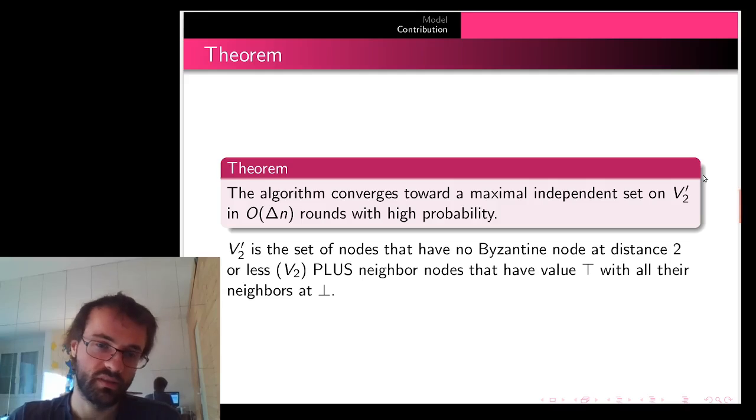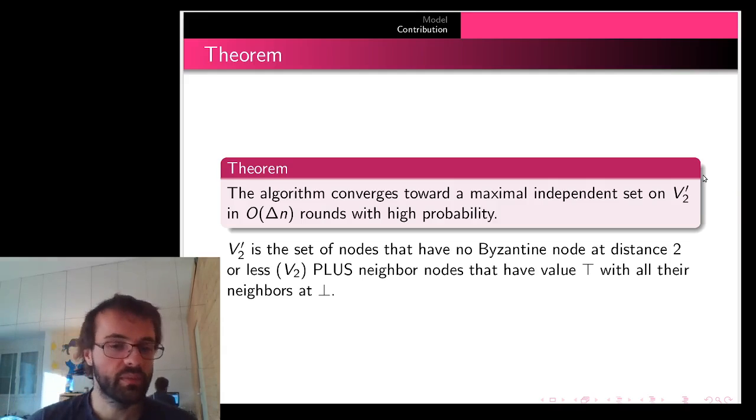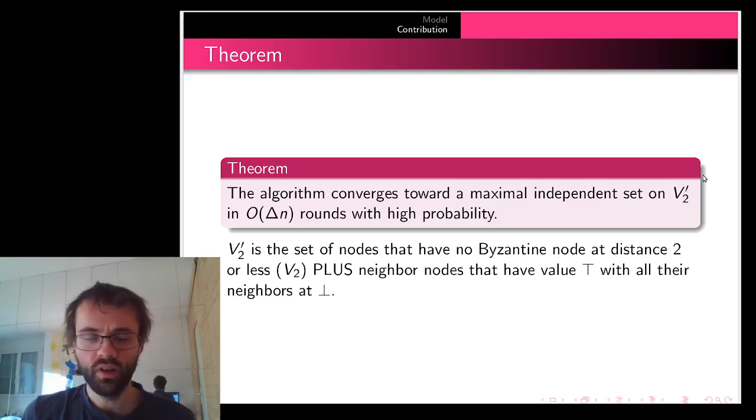Here is the theorem. The algorithm converges toward the maximal independent set on V2 prime in O(δn) rounds with high probability. V2 prime is a generalization of the notion of containment radius. We take every node that is at least distance three from Byzantine nodes, but we add some neighbors of that set when they have good properties.